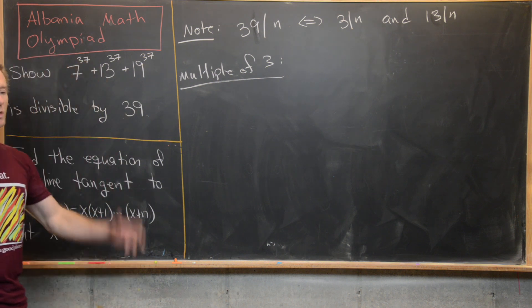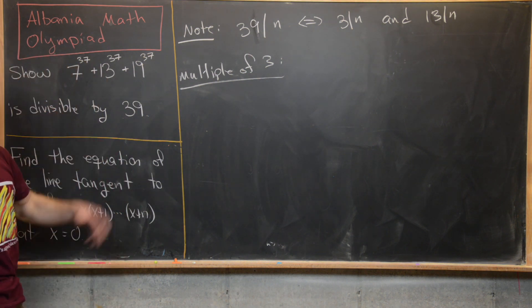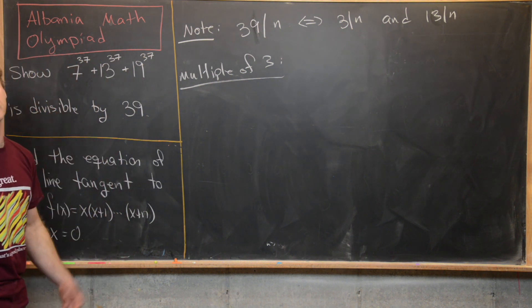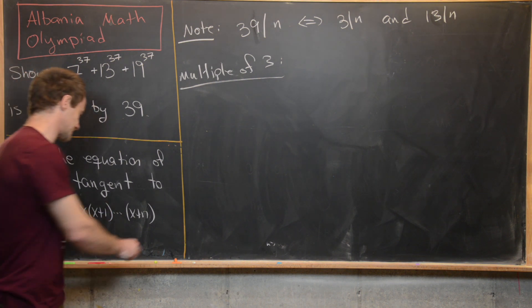And we're going to do this by using the notion of congruence modulo n. In this case, it's going to be congruence modulo 3.